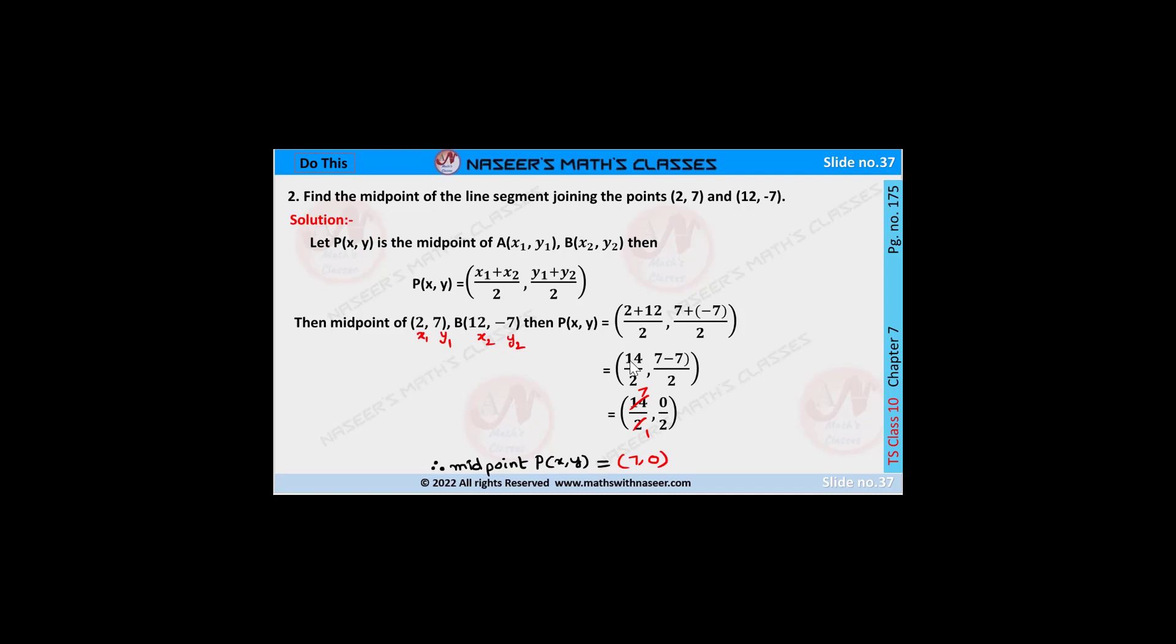2 + 12 is 14. Plus times minus is minus, so we can write 7 - 7. We get 14/2, (7-7)/2.